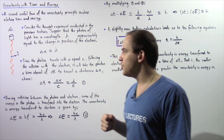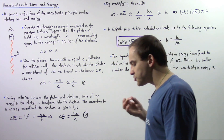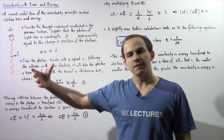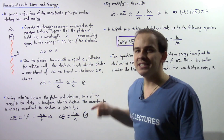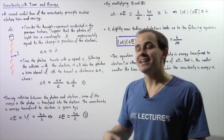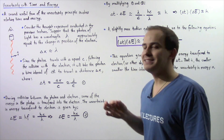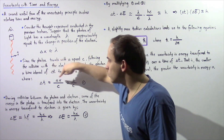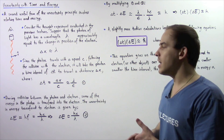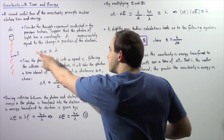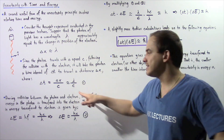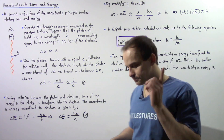We're assuming delta x is approximately equal to lambda, the wavelength of the light used. Since the photon travels with velocity c, the speed of light in a vacuum, following the collision of the photon and the electron, it will take the photon a time interval of delta t to travel an uncertainty distance given by delta x. So delta t is equal to delta x divided by c, the speed of that photon. Because we assume delta x ≈ lambda, we see that delta t is approximately equal to lambda divided by c. Let's call this Equation 1.